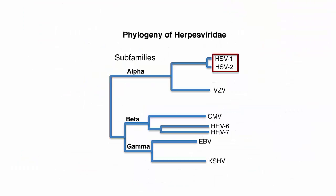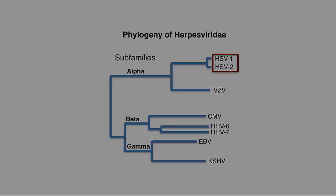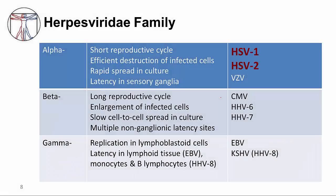HSV-1 and HSV-2, along with VZV, are part of the alpha subfamily of herpes viruses. There are also beta and gamma subfamilies, and the distinguishing characteristics of these subfamilies are shown in this table. For today, I simply want to focus on the alpha viruses as represented by HSV-1, HSV-2, and VZV.